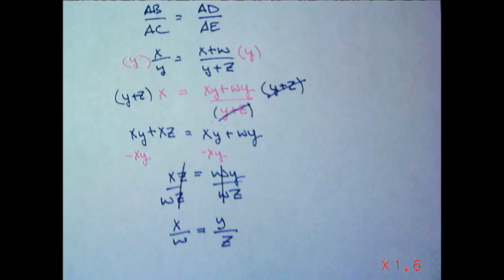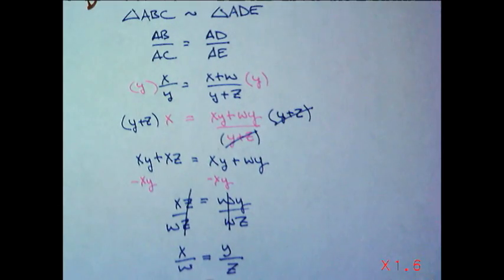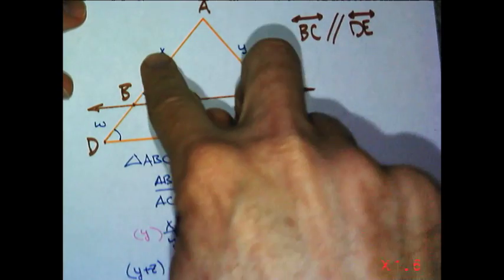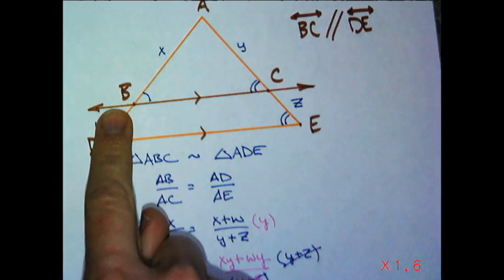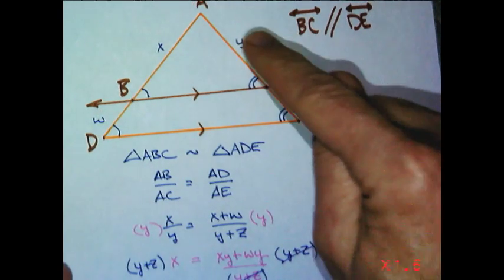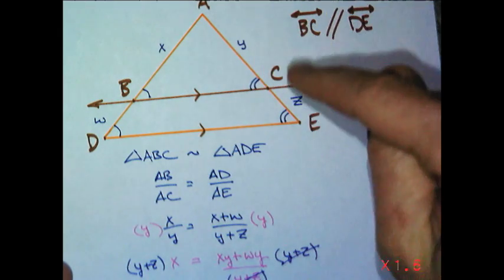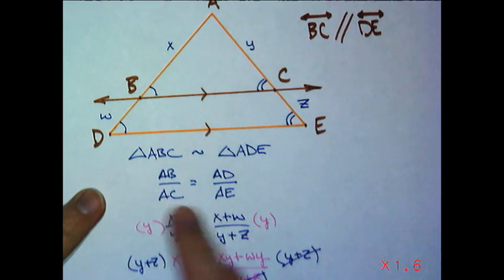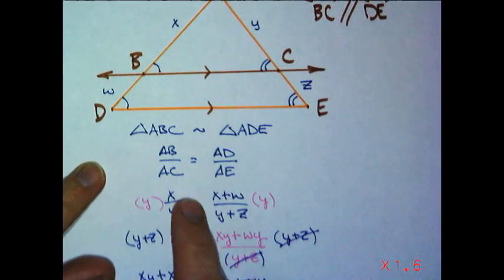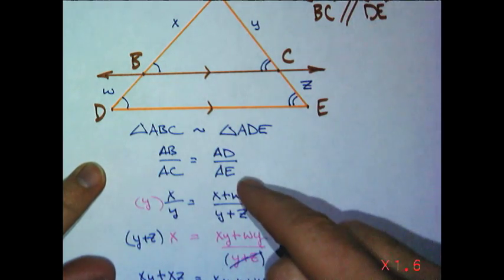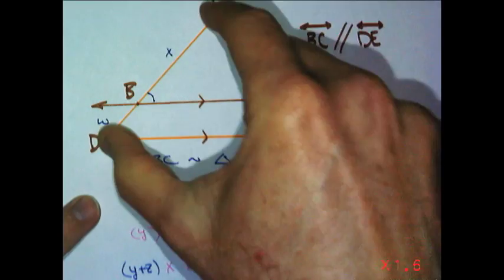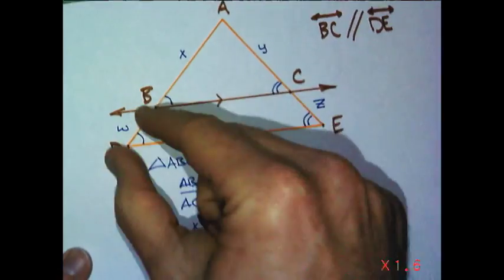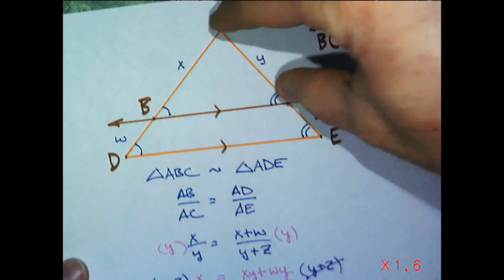And if I go back and look at my original triangle, X compared to W is going to be the same thing as Y compared to Z. Now remember, what I started with were the whole sides compared. So it was the whole big X compared to Y is equal to X, the whole thing, XW compared to YZ. I got X compared to W, piece to piece, as Y compared to Z.